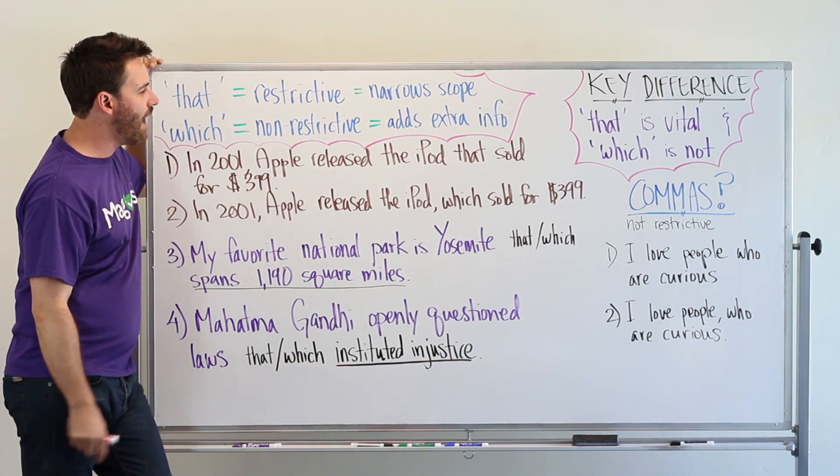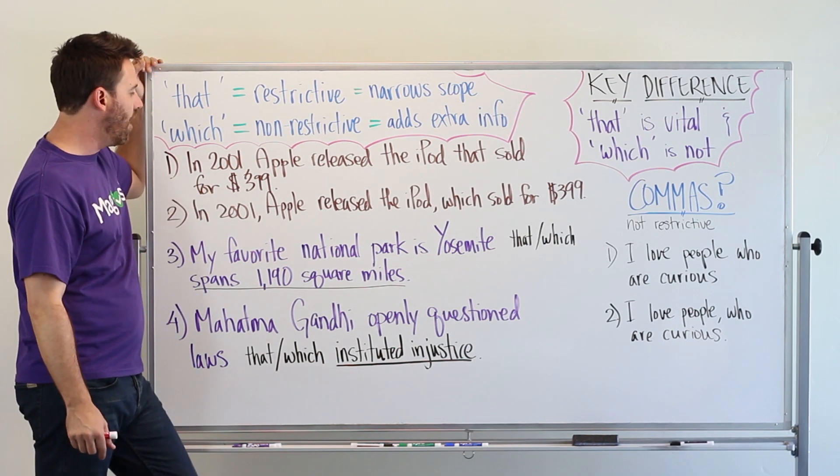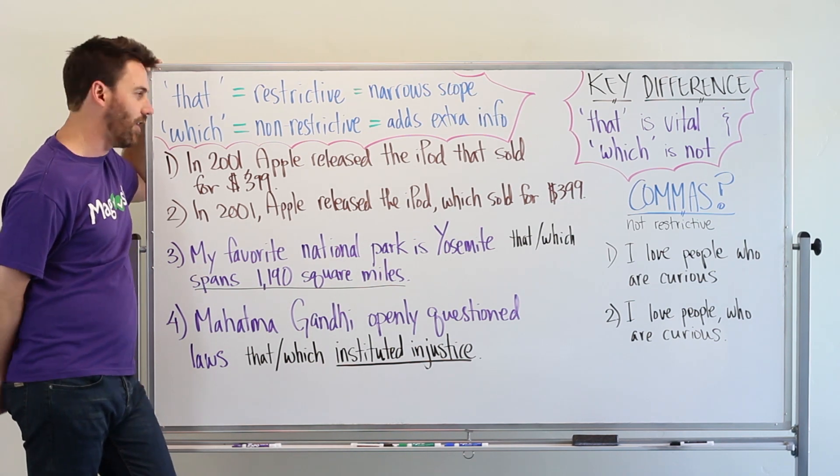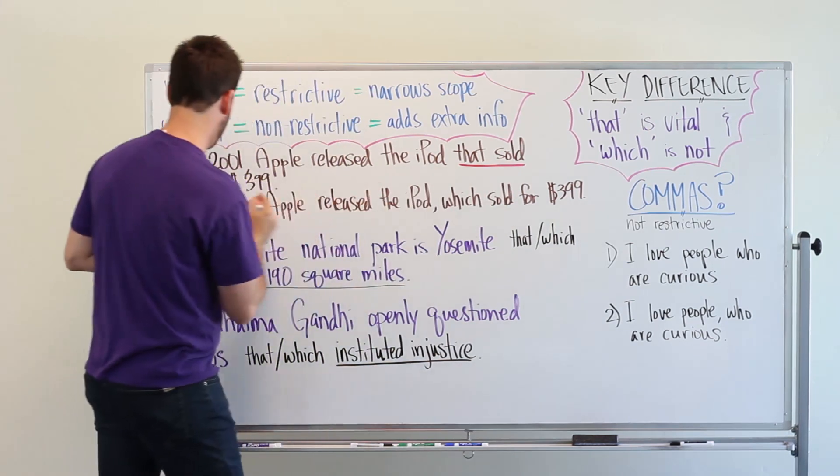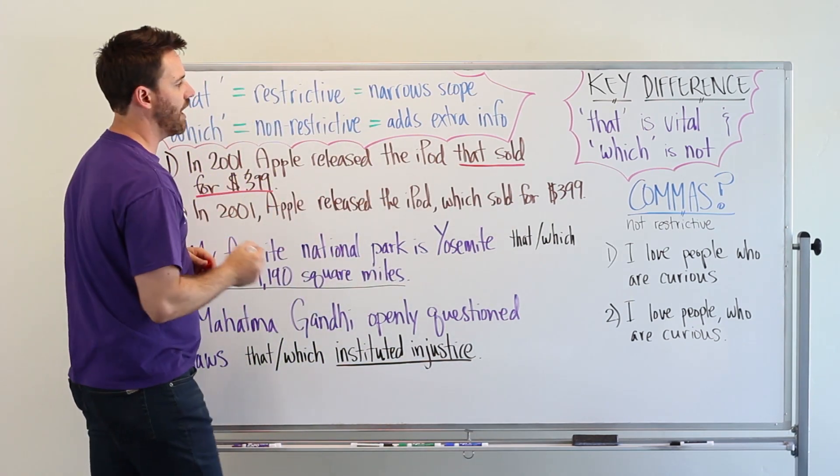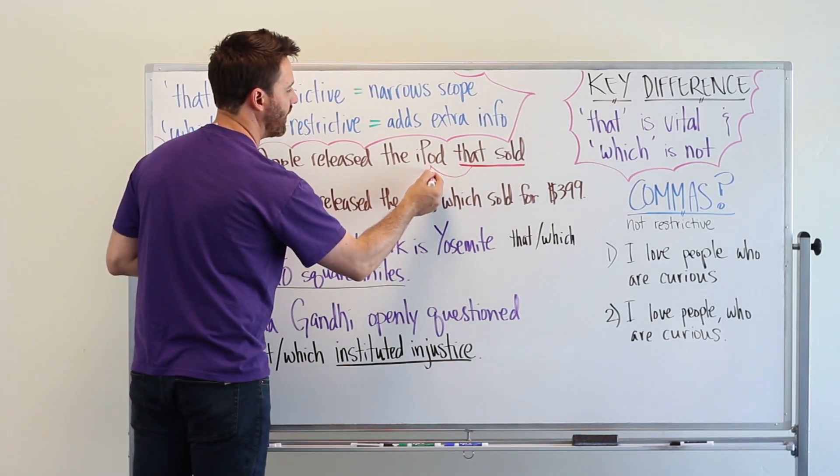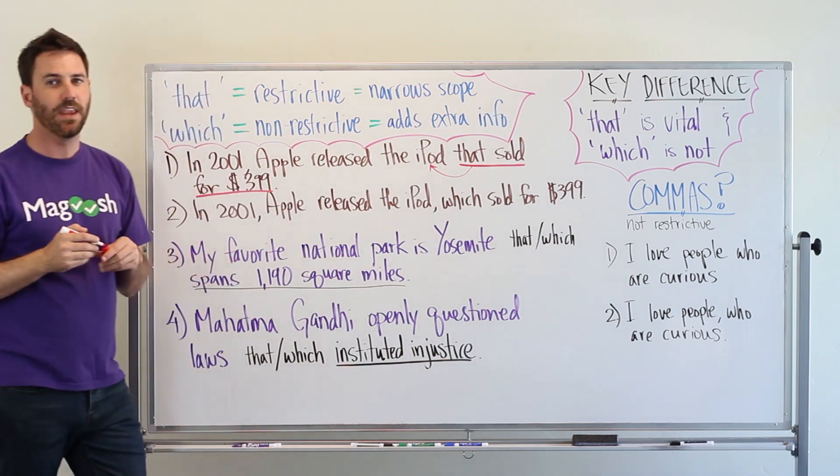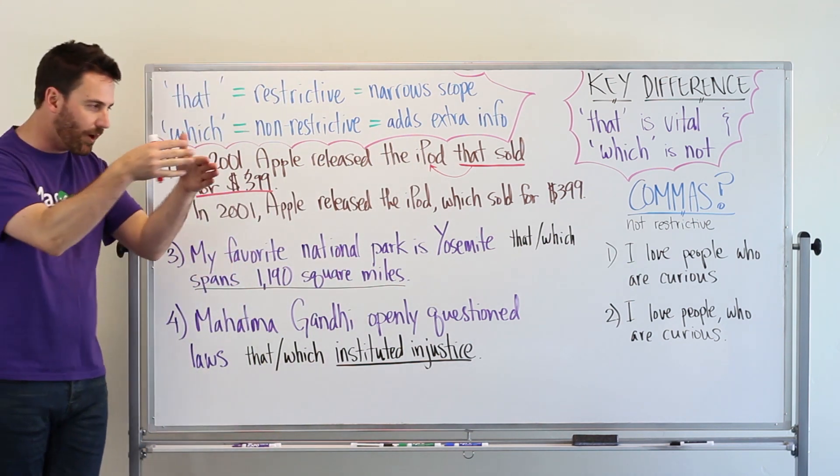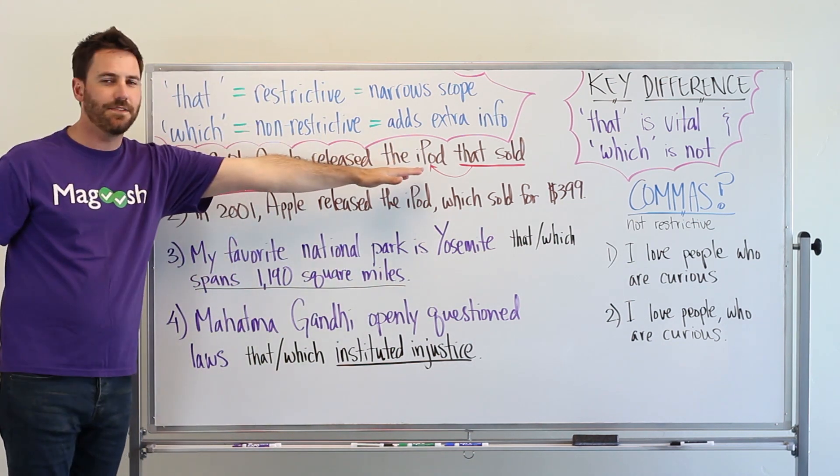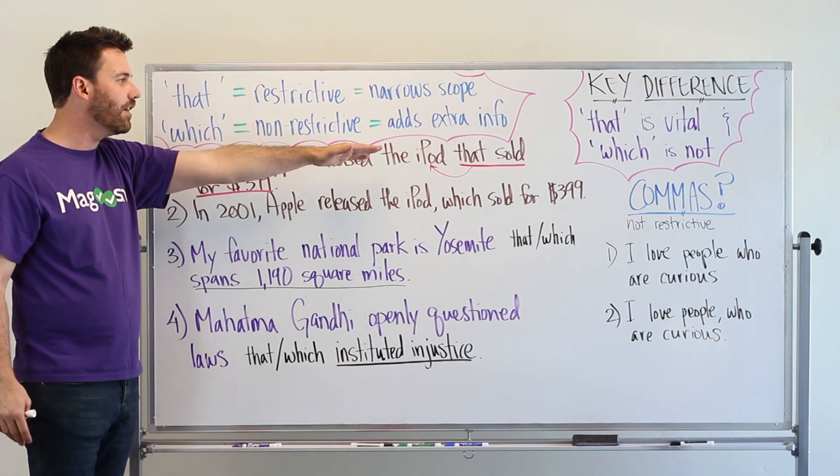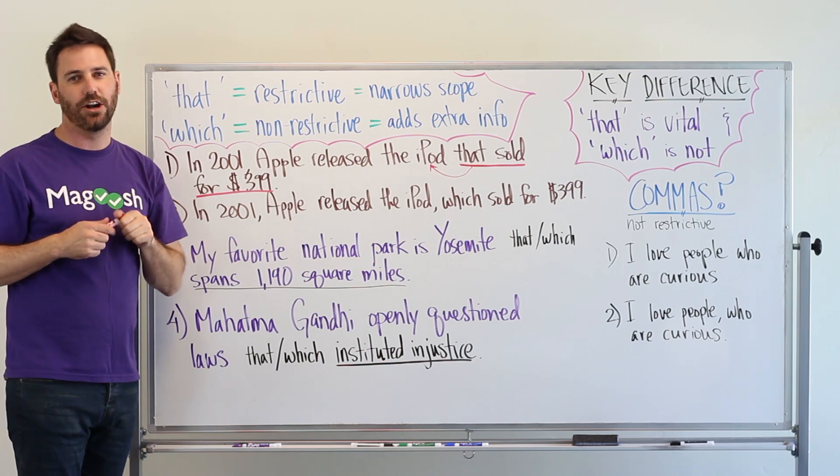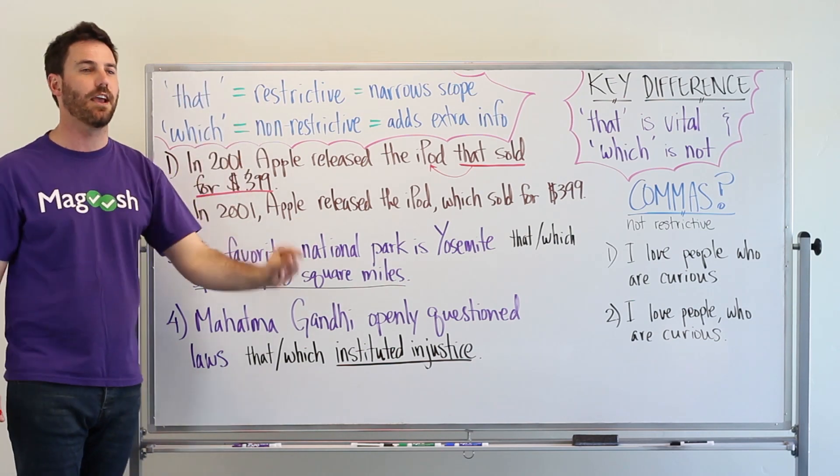In 2001 Apple released the iPod that sold for $399. In this sentence, that sold for $399 modifies the noun iPod and it is narrowing the meaning of this noun. So it's not just any iPod, it's the iPod. It's the iPod that sold for $399. A very specific iPod.